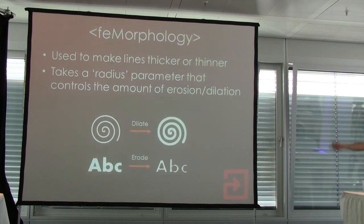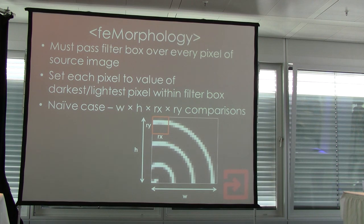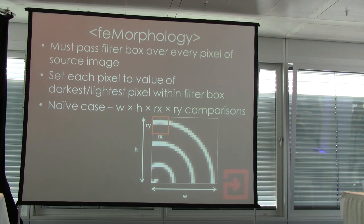In Firefox I found this filter called FE morphology. It's used to make lines thicker or thinner, and it takes a parameter called radius which controls how thick or thin to make a line — dilation makes lines thicker, erosion makes them thinner. This is how FE morphology works: the radius parameter defines the size of an orange box, and the filter passes that box over every single pixel of the input image. For each pixel, it puts the box around it, finds the lightest or darkest pixel within that region, and sets the value of that pixel accordingly — darkest for erosion, lightest for dilation.